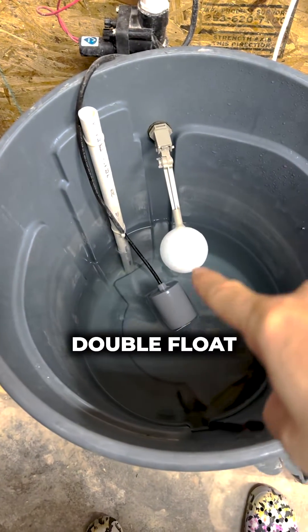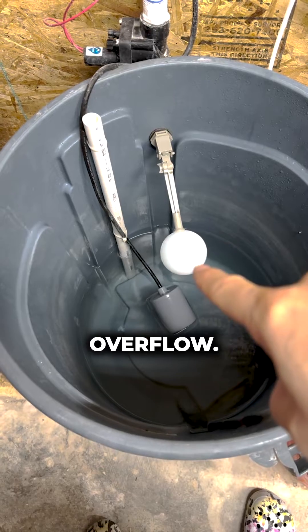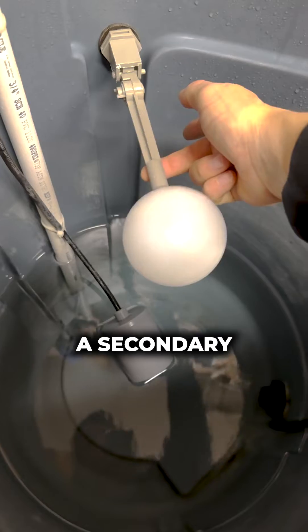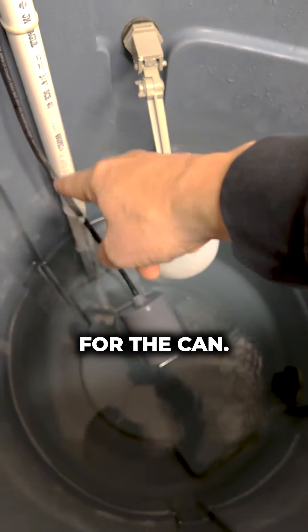Reservoir is going down. It's got a double float to protect against overflow. When the can drops low enough, the Dosatrons will kick on. This is a secondary protection in case of failure for the can.